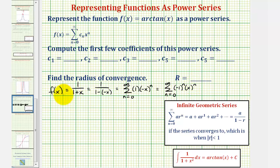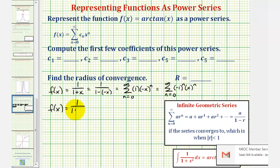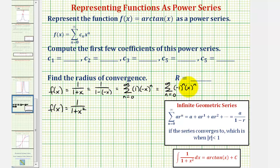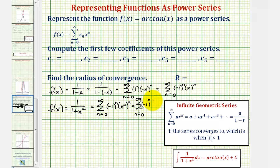Now let's consider a function that more closely resembles the integrand: f(x) = 1/(1+x²). Using the power series we just found, we can simply substitute x² for x. This gives us the summation from n=0 to infinity of (−1)^n times (x²)^n, which we can also write as the summation from n=0 to infinity of (−1)^n times x^(2n).